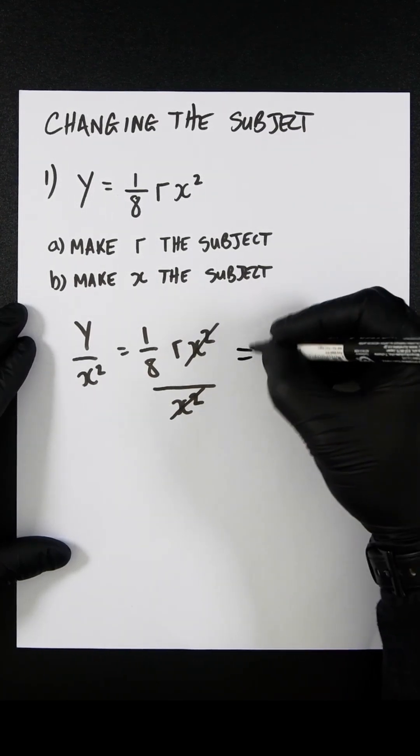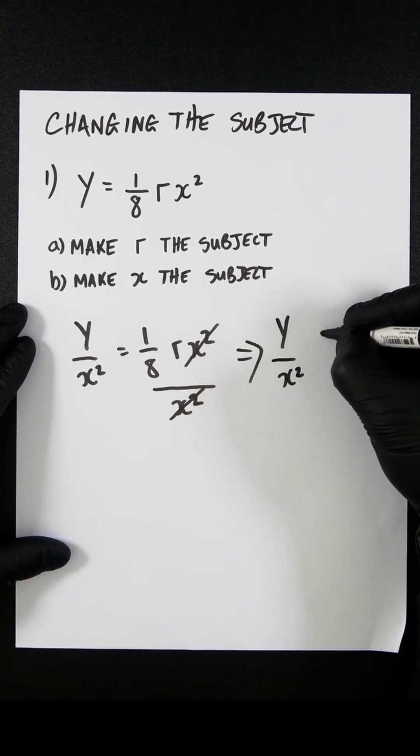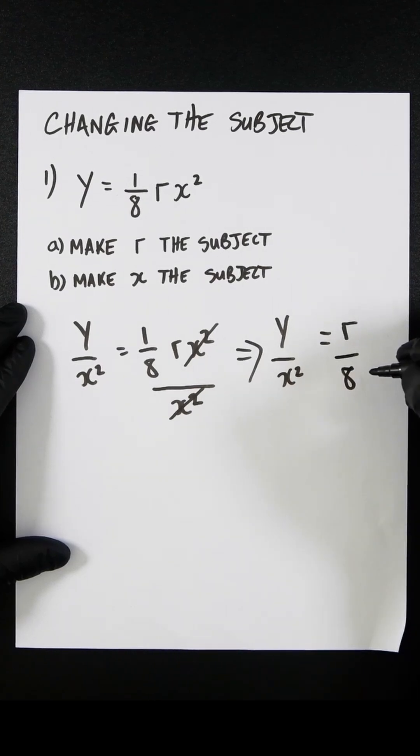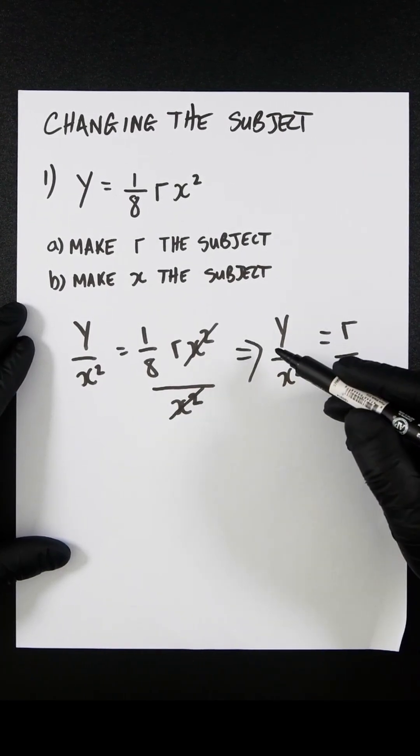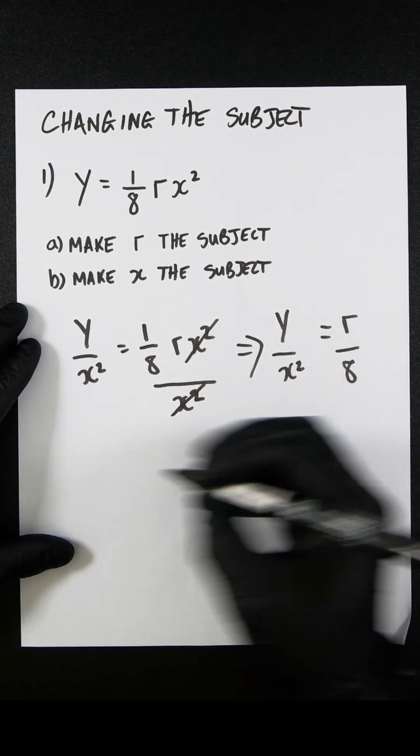This could be represented as y over x squared equals r over 8. So if we want to multiply both sides by 8, we will get rid of the 8 in this denominator. So let's do that.